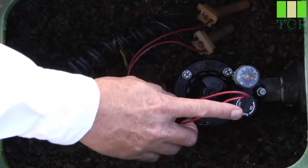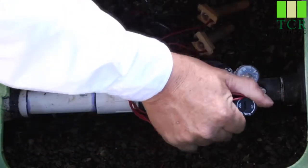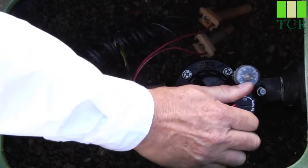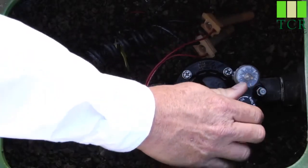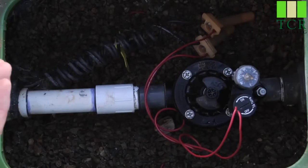To manually operate the valve, one would take the solenoid and turn it a quarter turn counter-clockwise. You'll hear the water start to flow, let go of the solenoid, and after you've done your field check on the heads and you're ready to turn the valve off,